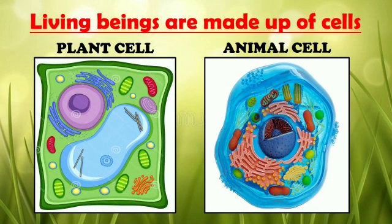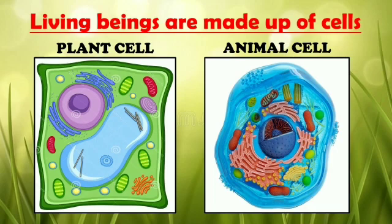The first characteristic is: living beings are made up of cells. Observe these pictures — they are plant and animal cells. When we construct a house we use bricks, cement, water, steel, wood, etc. to complete a house. Similarly, the body of a living being is made up of cells. You will be studying about parts of cells and their functions in higher classes.